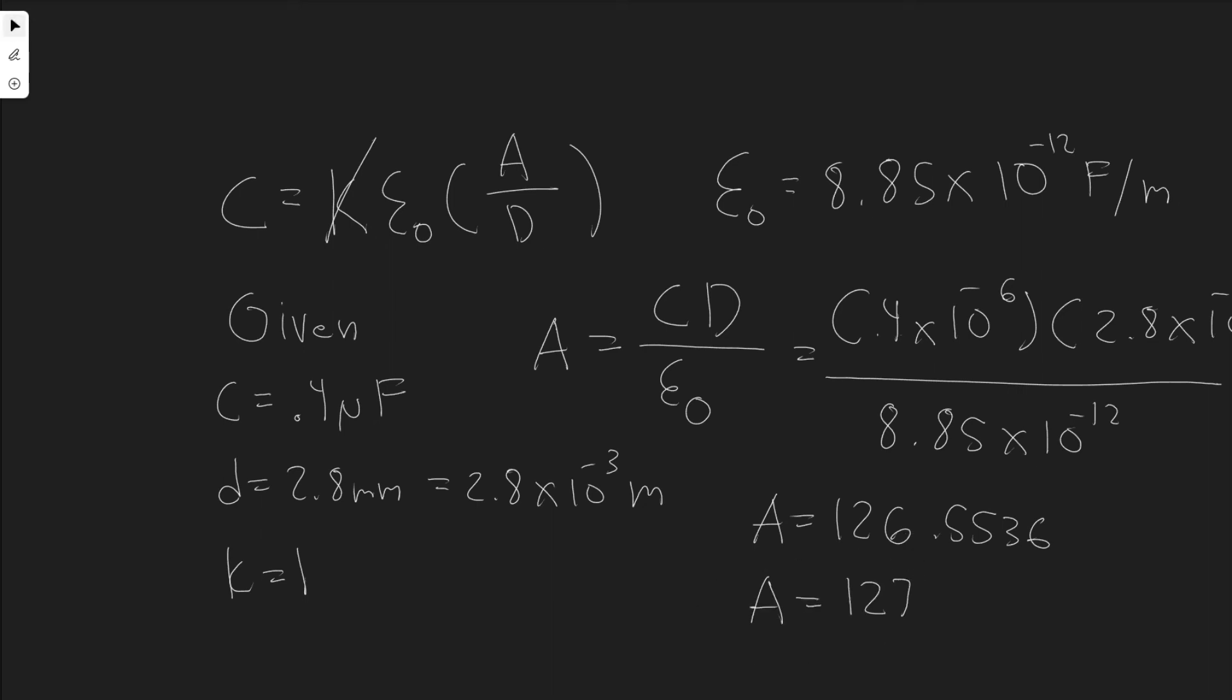And then keep in mind, we're dealing with area. And we're using meters in the equation. So this is going to be meters squared. So you can round however your teacher wants you to. But essentially, you're going to get the area of the plates. In order to make a capacitor with the specific requirements that they gave us, it's going to have to be 127 meters squared. That's going to be the area. So this is going to be the answer to the problem. And hopefully you found this useful.